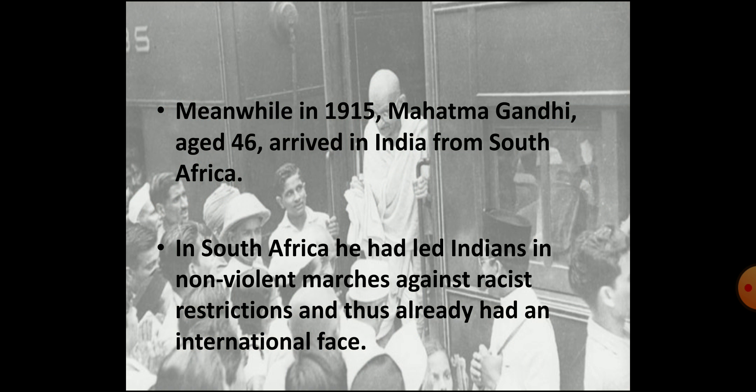It was also the time when Mahatma Gandhi emerged as a leader of the common mass. Mahatma Gandhi came to India from South Africa in 1915 at the age of 46 years. In South Africa, racial discrimination was practiced and Gandhiji led Indians there in non-violent marches against the racist restrictions. By his non-violent marches, he had gained a lot of respect at the international level. While campaigning against racial discrimination in South Africa, he came in contact with various types of Indians — of different religions such as Hindus, Muslims, Parsis, Christians; from different regions such as Gujaratis, Tamils and North Indians; and practicing different occupations such as upper class merchants, lawyers and workers.